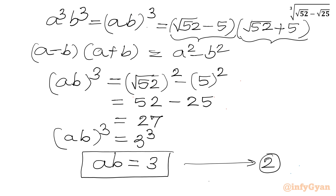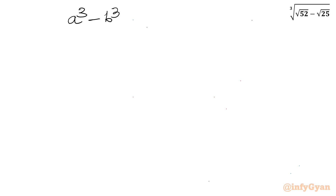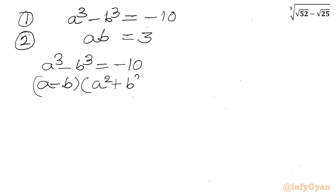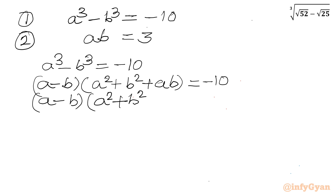Now we have to solve equation 1 and equation 2 for the value of a only. Equation 1: a cubed minus b cubed equals negative 10. Equation 2: ab equals 3. Expanding using the a cubed minus b cubed formula: a minus b times (a squared plus b squared plus ab) equals negative 10. We can rewrite a squared plus b squared as (a minus b) squared minus 2ab plus 3ab, giving a minus b times ((a minus b) squared plus 4ab) equal to negative 10.